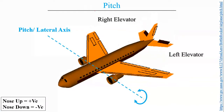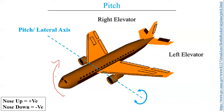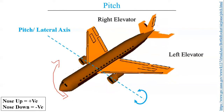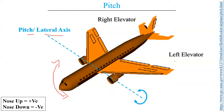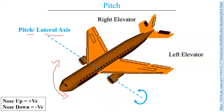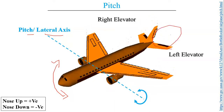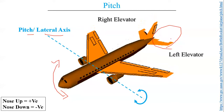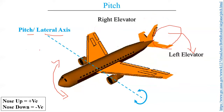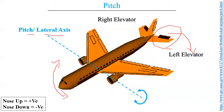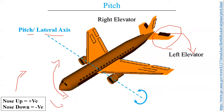Moving on to the next control motion — pitch. Pitch is the nose up and nose down motion of an aircraft, happening around the pitch or lateral axis. This motion is performed by the elevator control surface. Elevators are attached to the horizontal stabilizer — the orange portion is the horizontal stabilizer and the black portion is the elevator. Nose up motion is considered positive and nose down motion is considered negative.